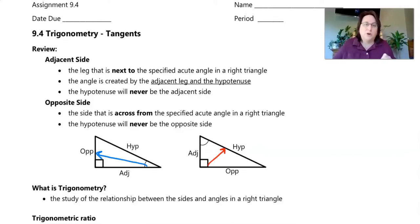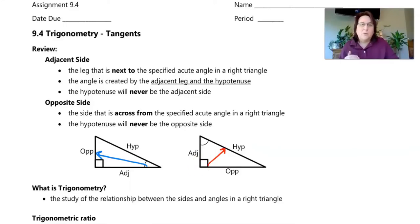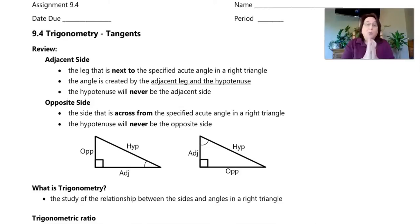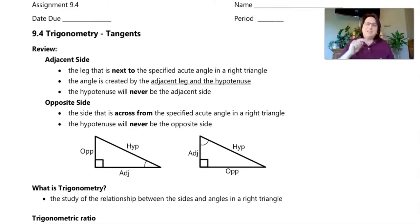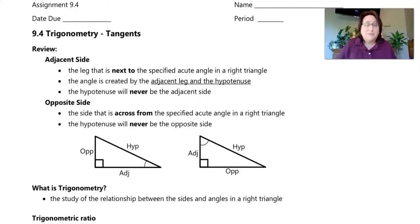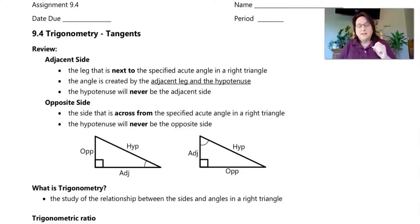You cannot use trigonometric ratios when your reference angle is the 90-degree angle. When we deal with these triangles, we're seeing where in the triangle we are standing — our reference point. Your point of reference makes a huge difference. If I'm in the front of the classroom, what is opposite of me is the back; if you're in the back, what's opposite is the front. Where you are in the triangle determines which side is opposite and which is adjacent. The hypotenuse is always across from the 90-degree angle.